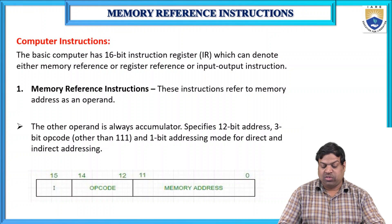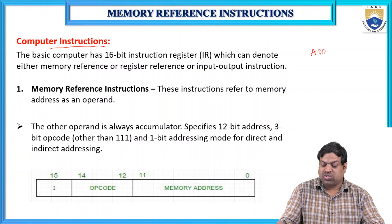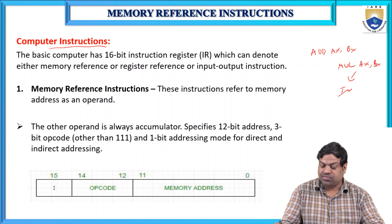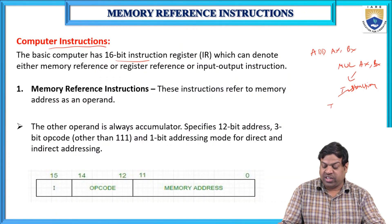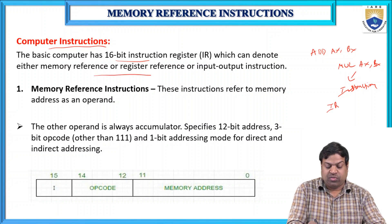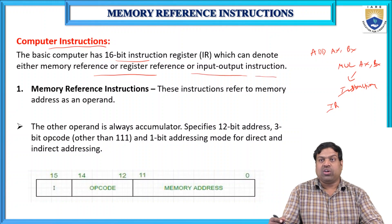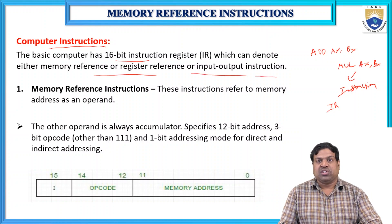Any instruction — such as ADD AX, BX or MUL AX, BX — is stored in a 16-bit instruction register (IR), which can denote either memory reference, register reference, or input-output instructions.